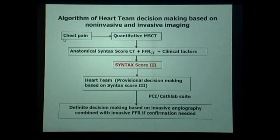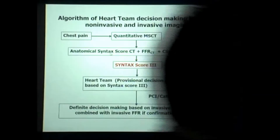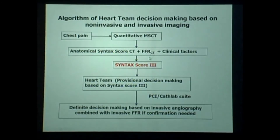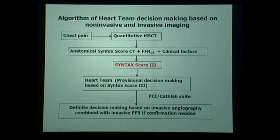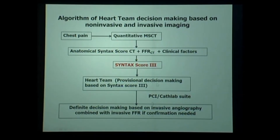The proposal of the trial we are starting now is: if you have chest pain, you get the quantitative multi-slice CT scan, the anatomical Syntax score, the FFR CT, and the clinical factors — you have the Syntax score 3 in this patient. We are still non-invasive. Then we go to the heart team if it is three-vessel disease with main stem. We have a provisional decision making based on Syntax score 3, and then with a lot of information available, you go finally to the cath lab. The main entry in the system will be the multi-slice CT scan.